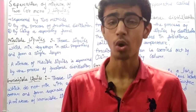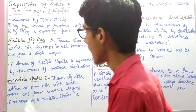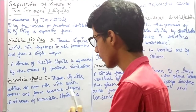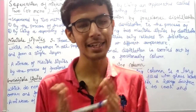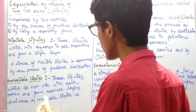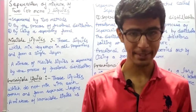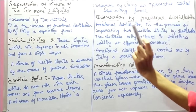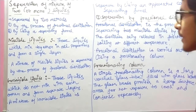A mixture of miscible liquids is separated by the process of fractional distillation. Immiscible liquids are those liquids that do not mix with each other and form separate layers. A mixture of immiscible liquids is separated by using an apparatus called a separating funnel.